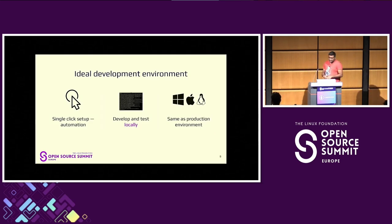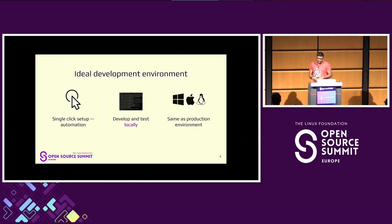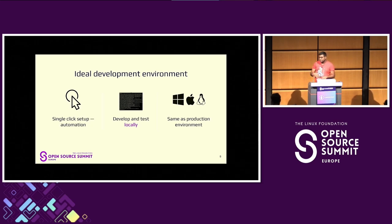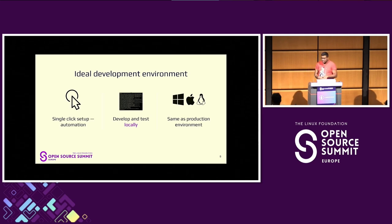An ideal development environment would look like this. Developers might come with different backgrounds, skill sets, and operating systems — Mac, Linux, or Windows. When a new person joins a team, onboarding involves looking up a wiki page and going through all the manual instructions, which might take a couple of days. Instead, we can automate that using scripts. The ideal development environment means developing and testing locally, the same as the production environment.